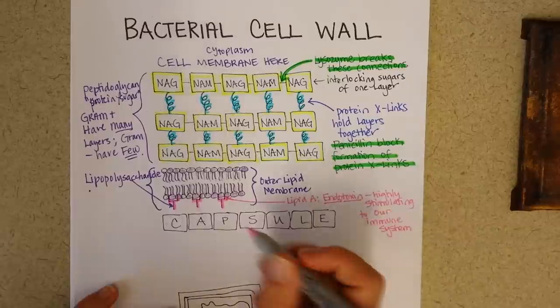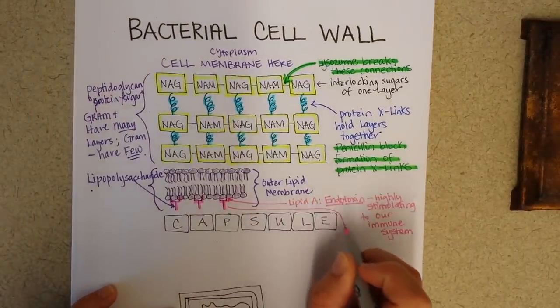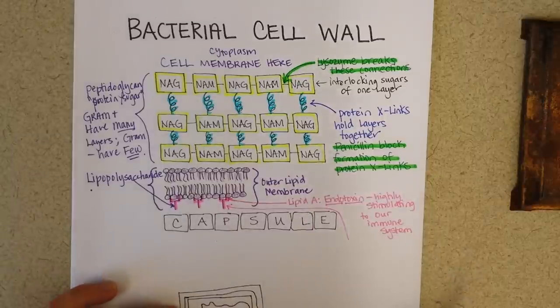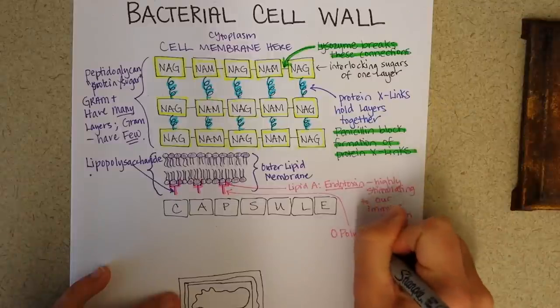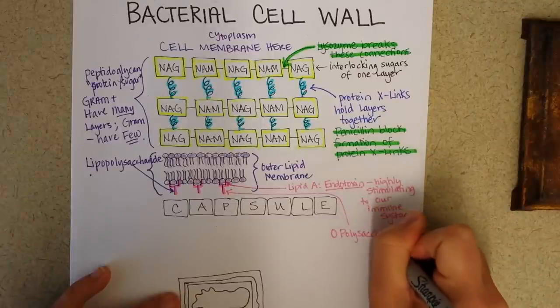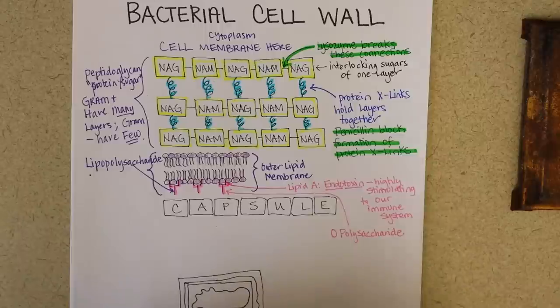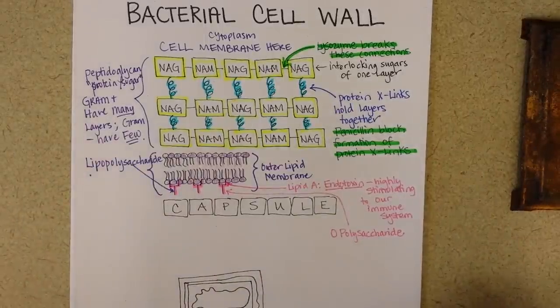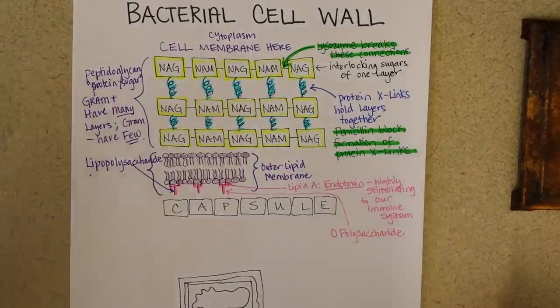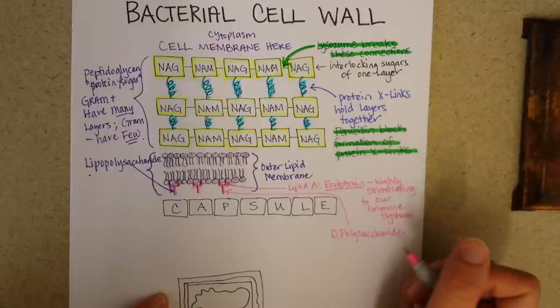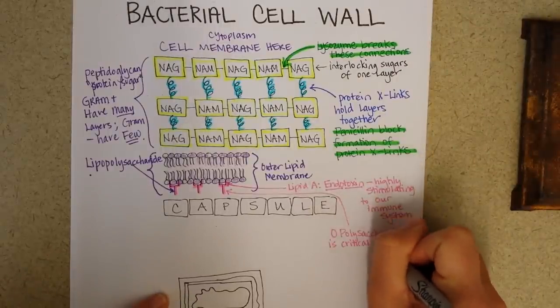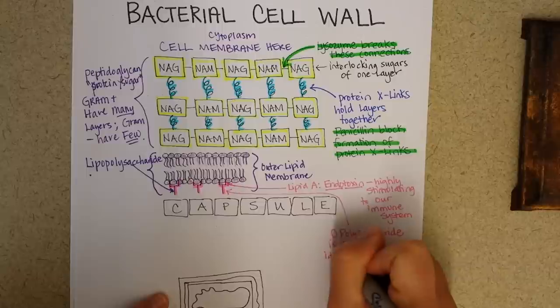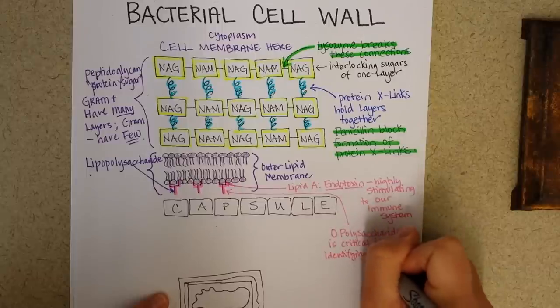And then this outer part is called the O polysaccharide part of it. So you can tell it's got sugars in it. And you see that saccharide. And O is just the name for this particular antigen. And this O polysaccharide is critical in identification of different bacteria.